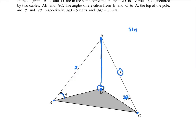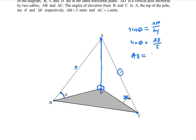On triangle ABD, we can see that sine of theta equals opposite divided by hypotenuse. So we have sine of theta equals opposite AD divided by hypotenuse 5. If we cross multiply, we get AD equals 5 sine theta.